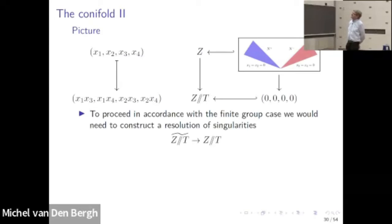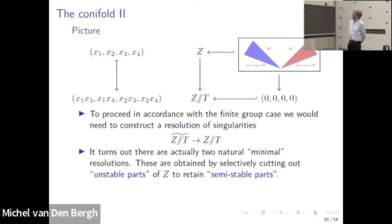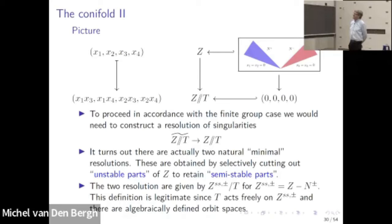We have the quotient map, and we have the inverse image of the origin, which consists of two parts. Recall that in the finite group case, we took a resolution of the quotient — we should do that here too. But it turns out that the minimal resolutions are now no longer unique; this is a feature of birational geometry in higher dimensions. There are actually two resolutions. The way to get them is by taking out one of the parts of this inverse image of the origin, which I call the unstable parts. What remains is called the semi-stable part.